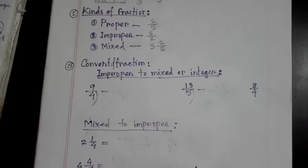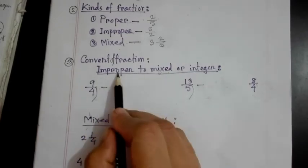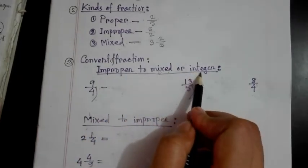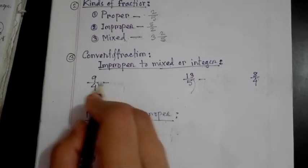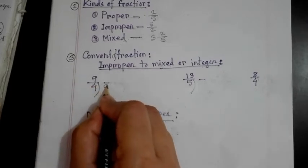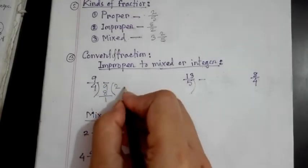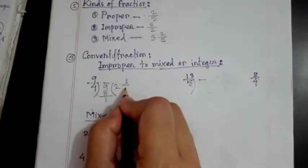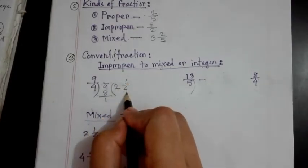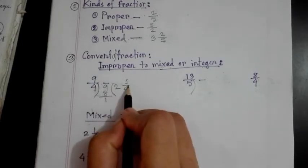Now we will learn how to convert fractions — how we convert improper to mixed, or improper to integer. I write here an example: 9 by 4. You just divide 9 by 4. 4 times 2 is 8, remainder is 1. I write 1 above the division line and 4 below the division line. So 2 whole 1 by 4 — this is a mixed fraction. In this way we can convert an improper fraction to a mixed fraction. Look at another example: 13 by 5. 5 times 2 is 10, remainder is 3. Now I write 3 here and 5 below the division line. So 2 whole 3 by 5 — this is the mixed fraction.